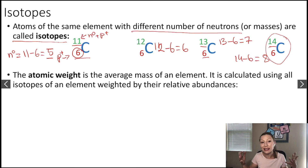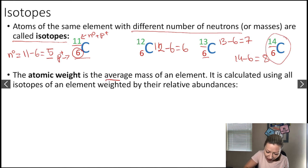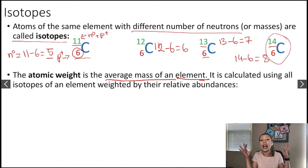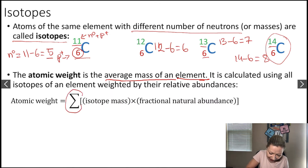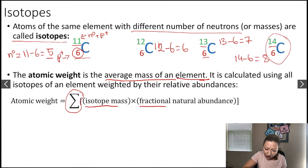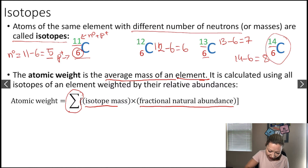The atomic weight given in the periodic table is the average mass of an element, and it is calculated using all the isotopes of an element weighted by their relative abundances. The formula is: atomic weight equals the sum of the isotope mass multiplied by the fractional natural abundance. Don't be scared because of the sum sign — let me give you a very simple example.